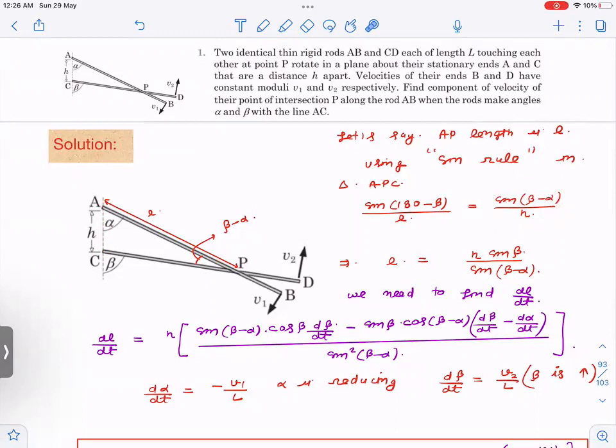So what do we want to find out? We want to find out dl by dt. As these two rods move, the point of intersection will move, but we have to find its velocity component along this rod, so we can just differentiate. l is in terms of beta and alpha and h. h is constant and we can just do dl by dt.